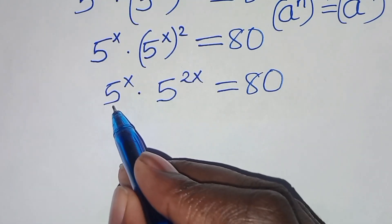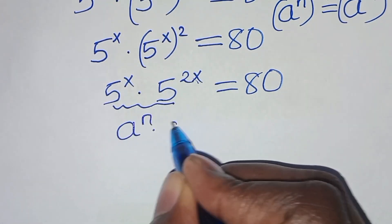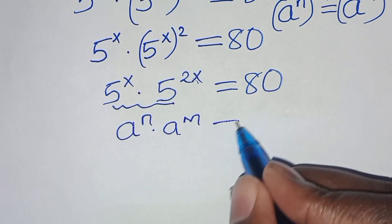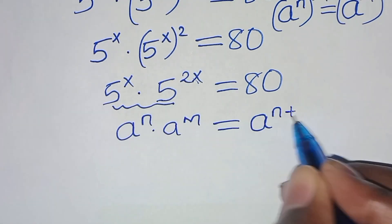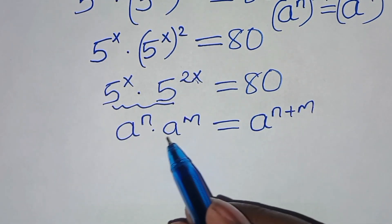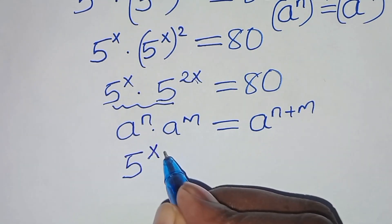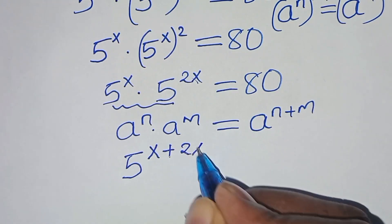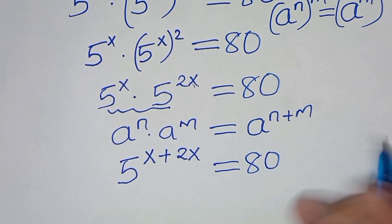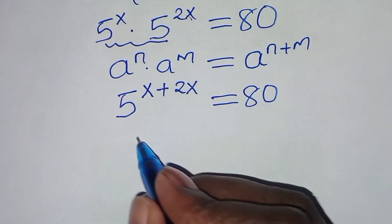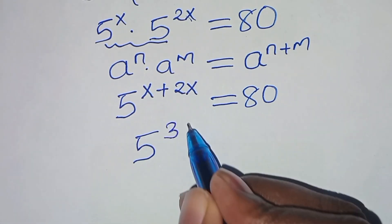This exponent equation is in the form of a to the power n times a to the power m, which we can express as a to the power n plus m. Applying this exponent property, we have 5 to the power x plus 2x. This is equal to 80. So here, x plus 2x is 3x, and this is equal to 80.